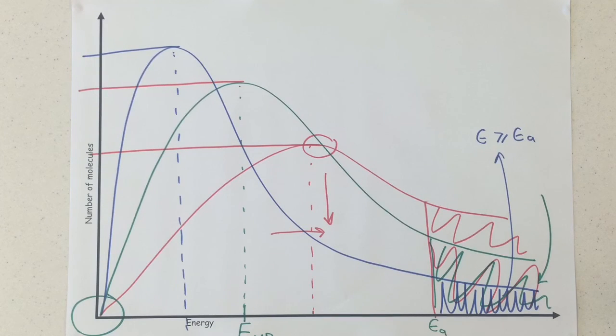Final thing to say about all three of these curves that I've got here for different temperatures is that the area under the curve is the same each time because increasing the temperature doesn't just randomly increase the total number of molecules in a system.